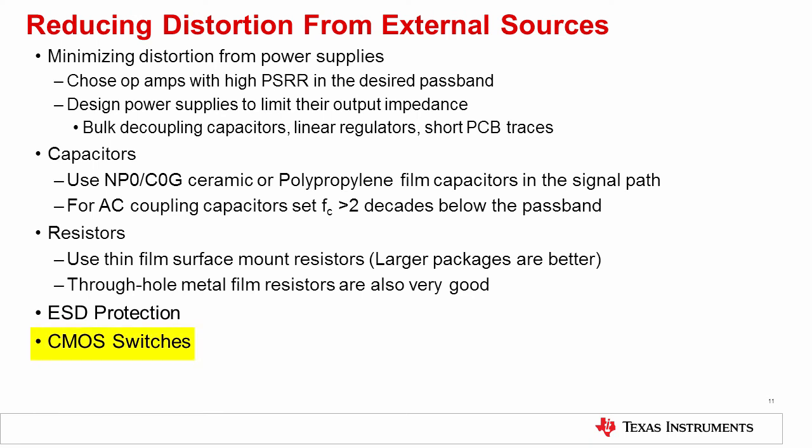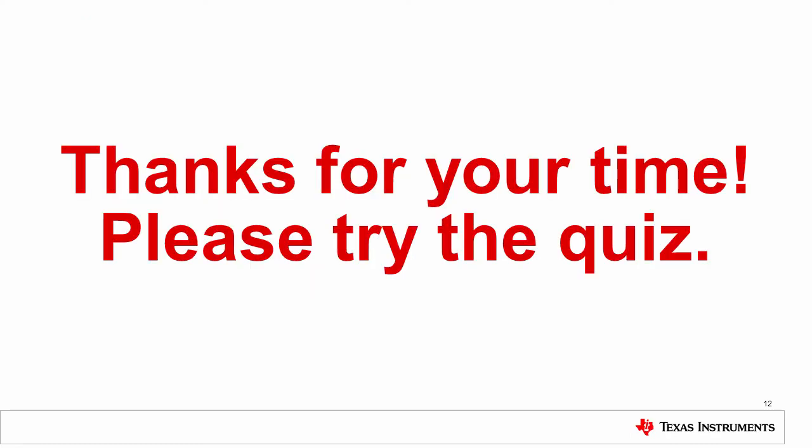Finally, in the case of CMOS switches, minimize the current through the switch by using them with high impedance loads. Another option is to close the switch inside the feedback loop of the amplifier, allowing feedback to minimize distortion. In summary, we explained the external sources of distortion in op-amp circuitry and learned methods for minimizing this distortion. This concludes the series on designing low distortion op-amp circuitry. Thank you for your time. Please try the quiz to check your understanding of this video's content.